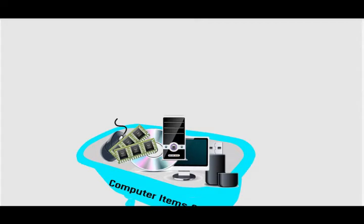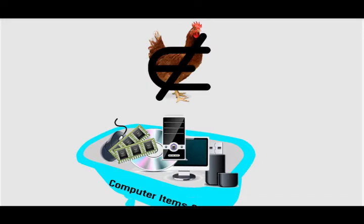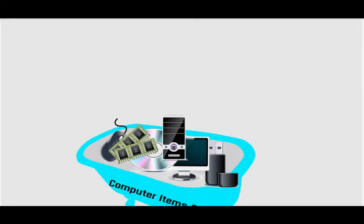One more test: does a hen belong to the above class? No — but what is the criteria behind that answer? A hen is never used in computers, so it does not belong to the set. That means there is some rule or reason that verifies whether an item belongs to a particular set or not. That is what is meant by the word 'well-defined' in the definition. So 'well-defined' allows us to determine whether a particular object is a member of the set or not.